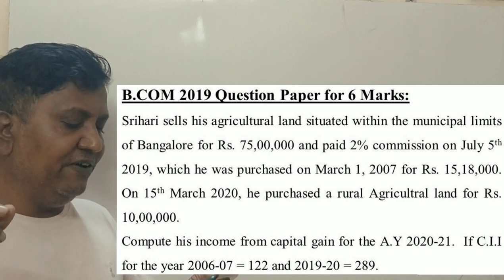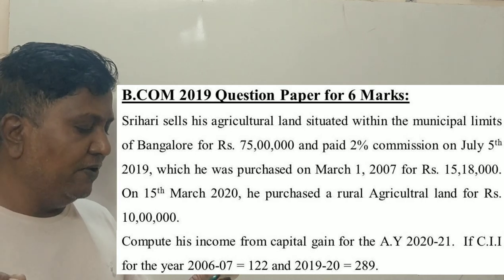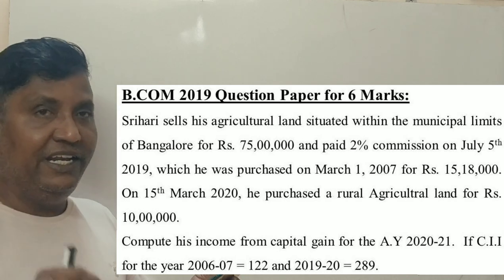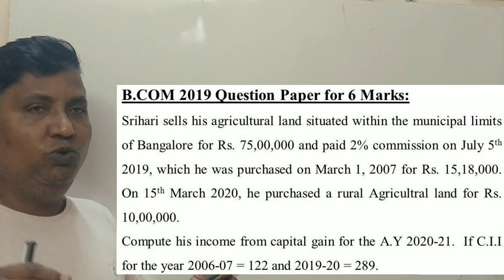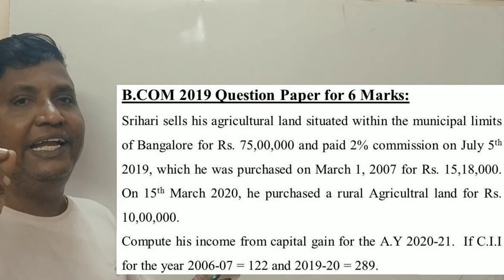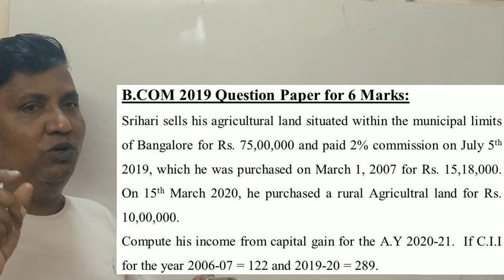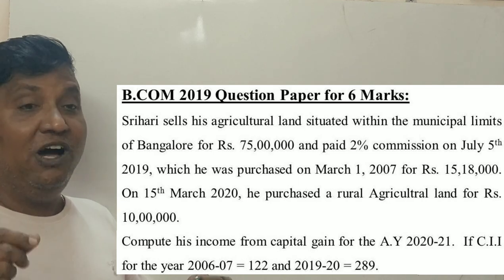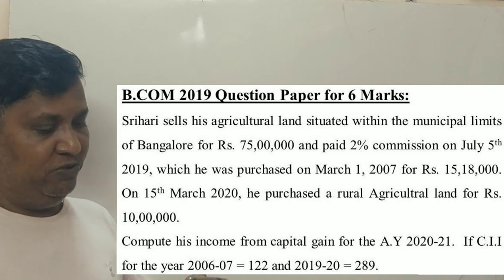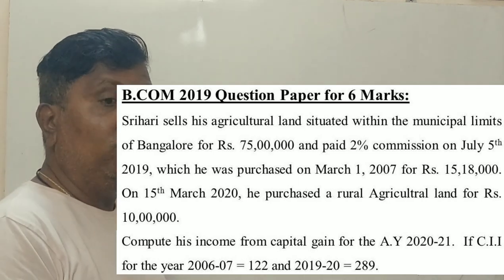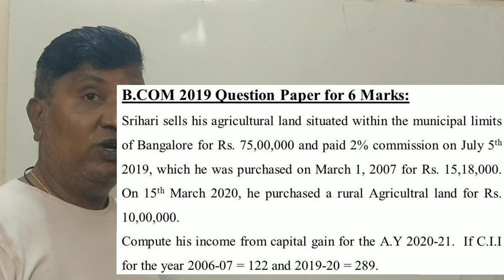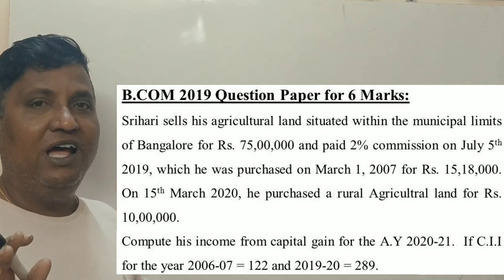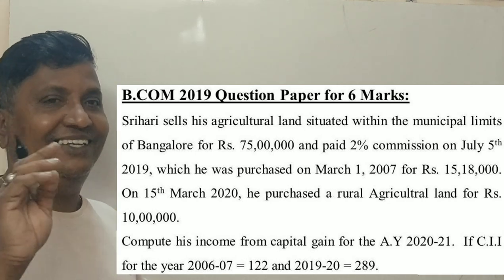The cost of inflation index for the year 2006-07 is 122 and for 2019-20 is 289. This is the question. This is the rural agricultural land versus the urban agricultural land — the computation of long-term capital gain.